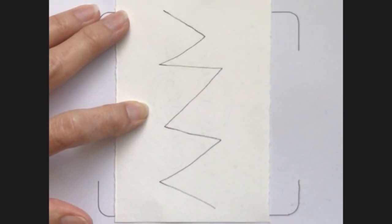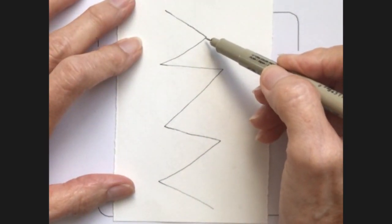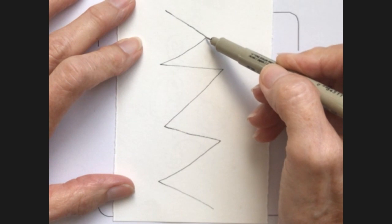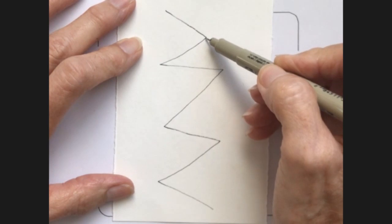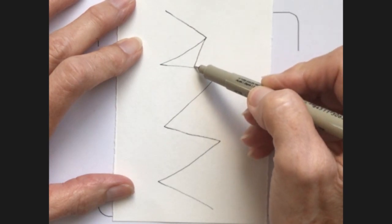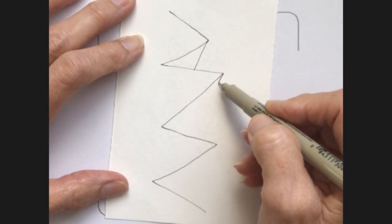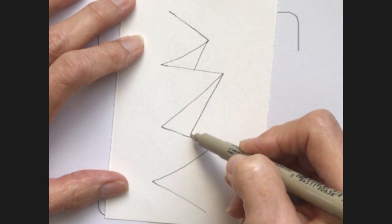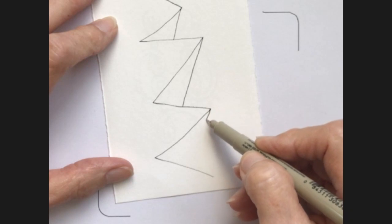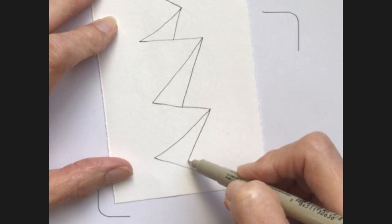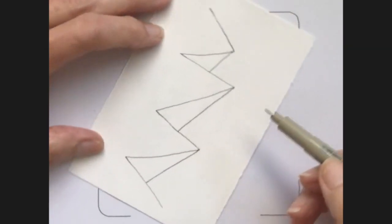And then the first step is you're going to go to each of these corners and bring that tip down to about halfway on the line below it. So we're going to go down, down, and down. Each one of those went to about halfway on the line below it. It doesn't have to be perfect.